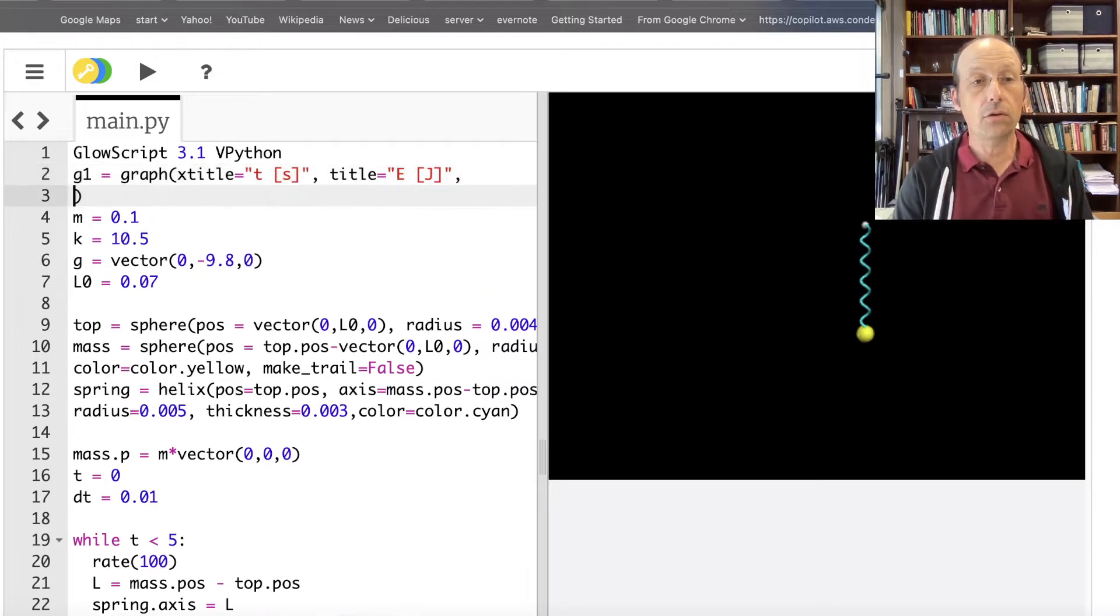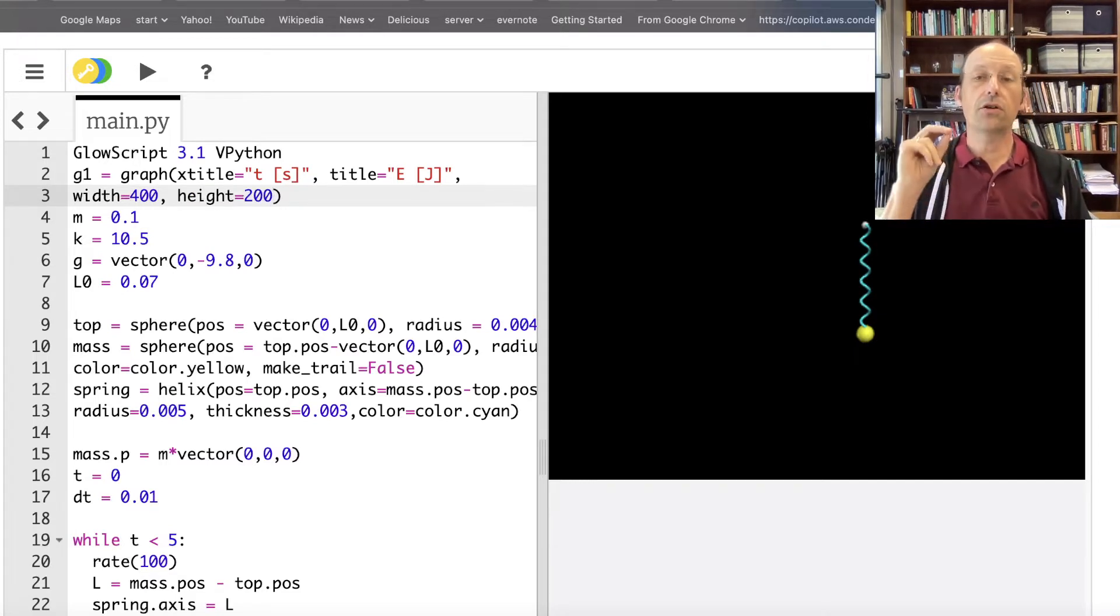And then the Y title is going to be equal to energy of joules. One of the things I like to do is to set the width. So I'm actually going to make it a little bit smaller than I normally do. So width equals, let's try 400. Height equals 200. And so what that's going to do is to make it, when I run it, you can see the whole graph. You can leave it the way you want it. You don't have to put that in there.